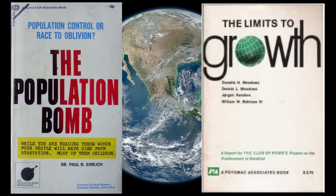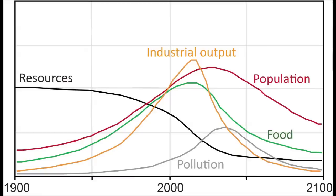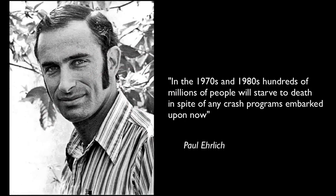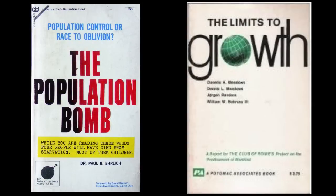Limits to Growth was written by a team at the Massachusetts Institute of Technology. Both works predicted disaster for humanity due to rapid population growth outstripping resource supply. Ehrlich made a grim prediction that in the 1970s and 80s hundreds of millions of people would be starved to death in spite of any crash program embarked upon. Both books urged that radical action was needed to limit overpopulation, rekindling debate about whether Malthus was right or wrong.